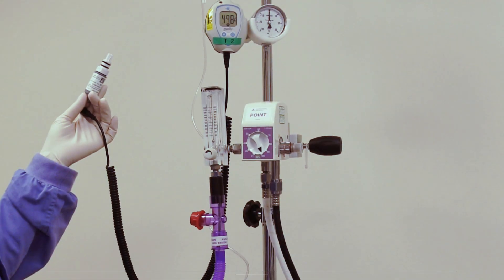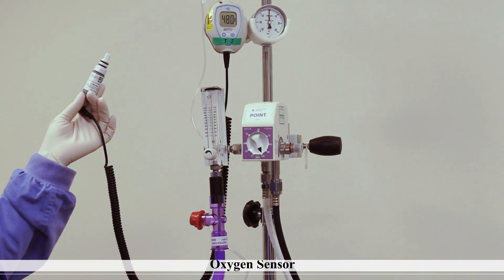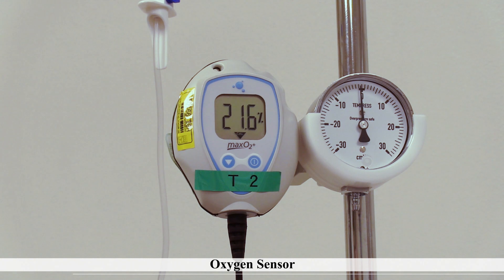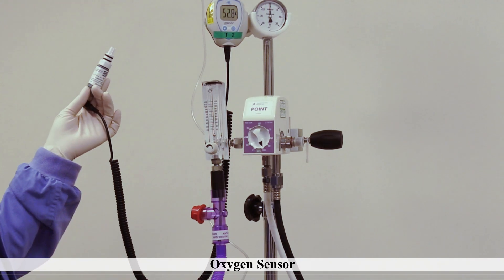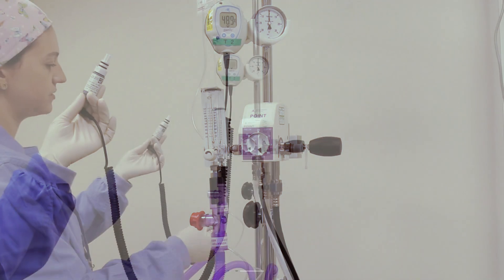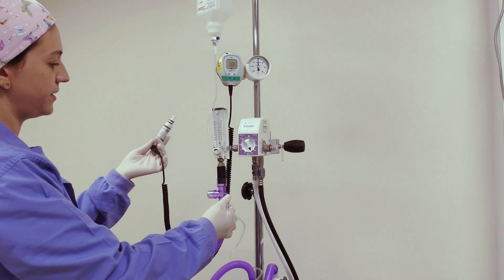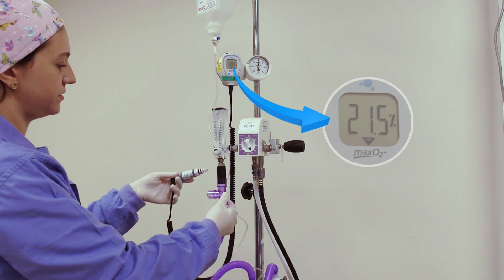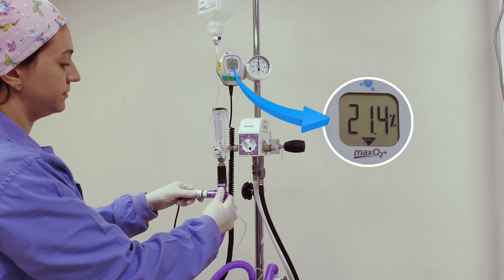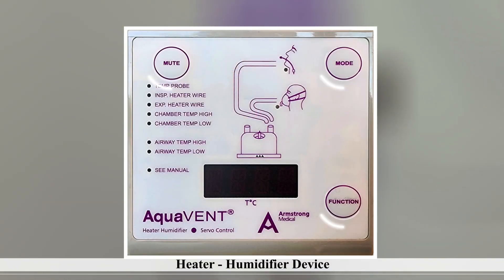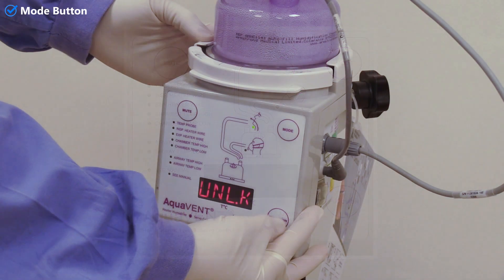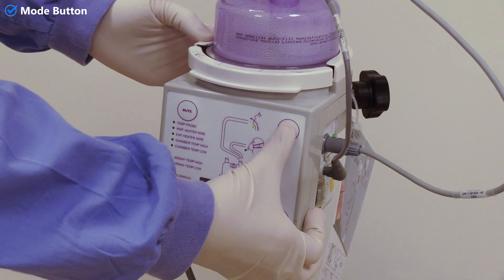This is the oxygen sensor, responsible for reading the oxygen concentration delivered to the patient. It must be calibrated by exposing it to room air before use. Once the reading reaches 21 percent, you can reinsert it.